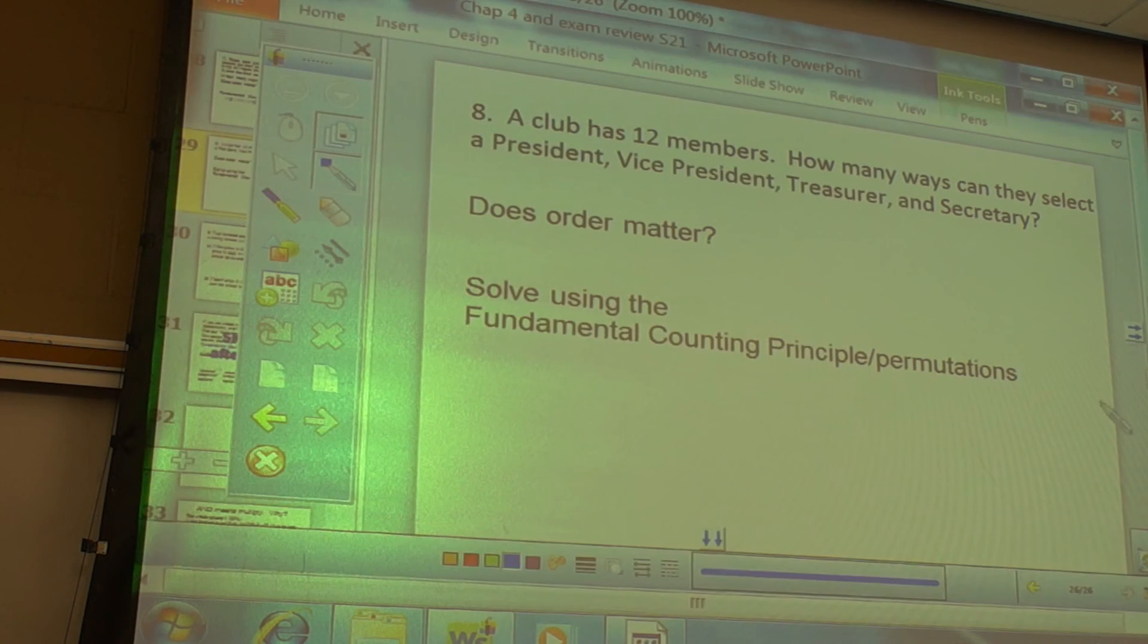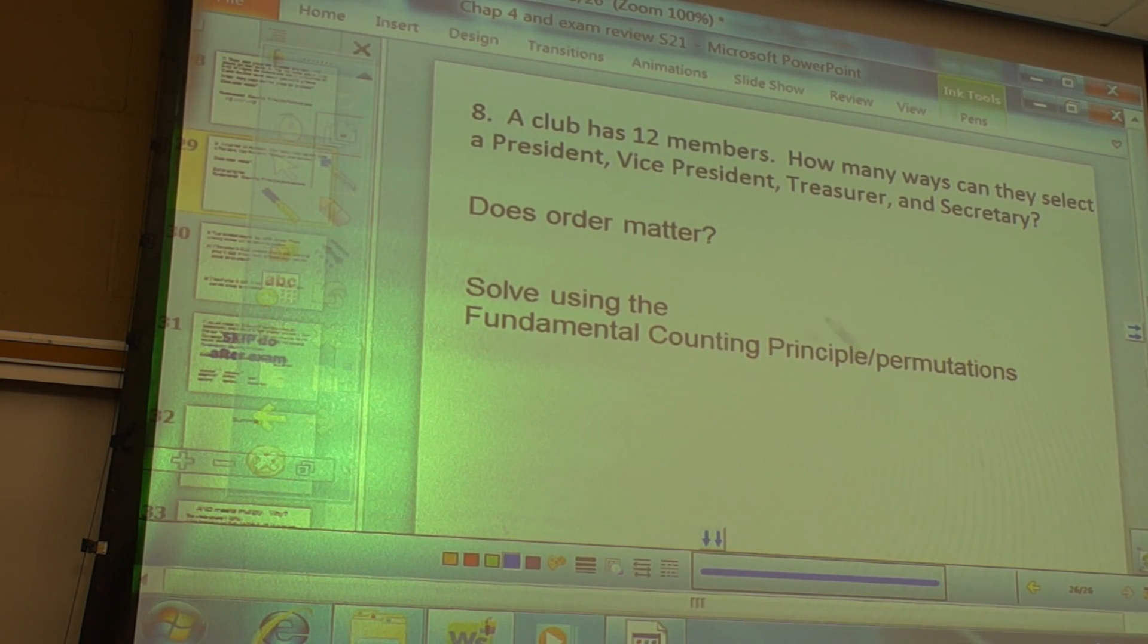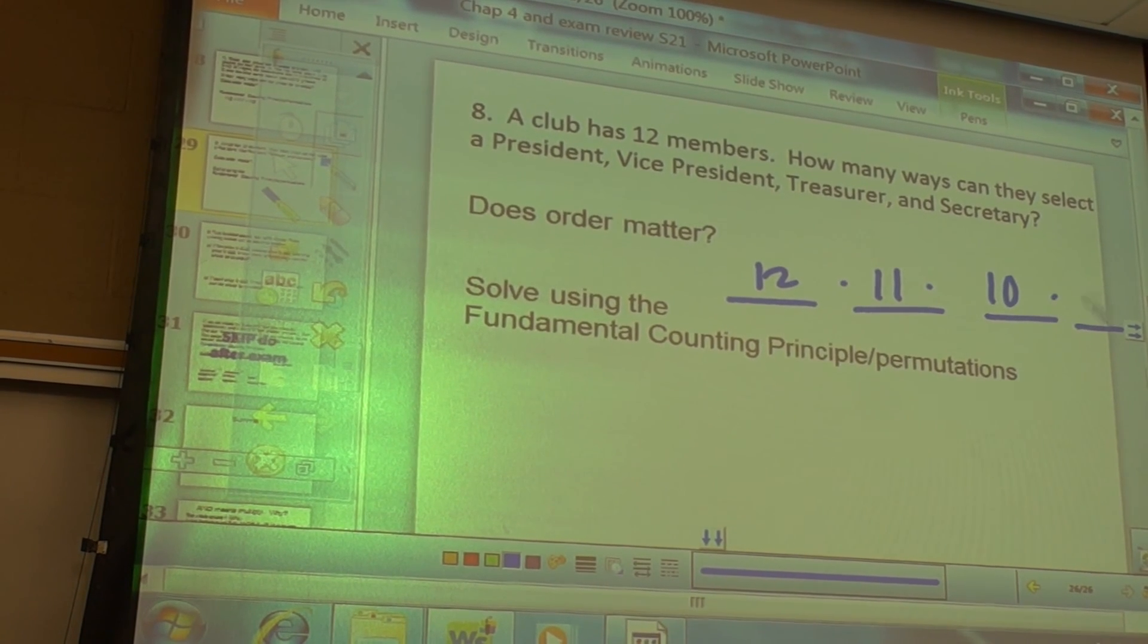Okay. This one. President, Vice President, Treasurer, or Secretary. Does order matter? Yes. Yes, yes. Totally matters. That's when the President or Secretary. So, we're picking 4 spots. How many options for the 1st? 12, 3, and 11, and 9. No division. So there's no chaos. Order matters.